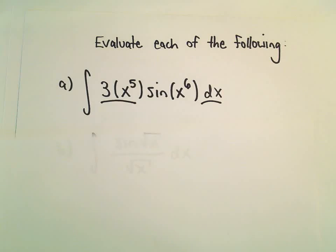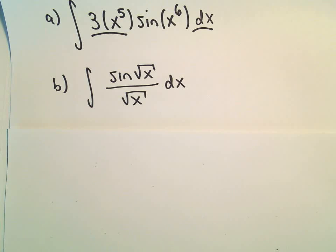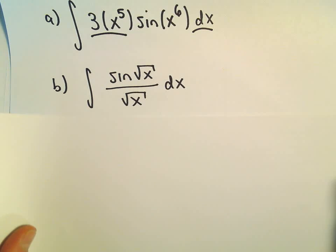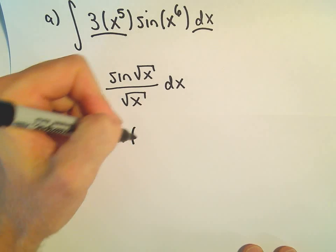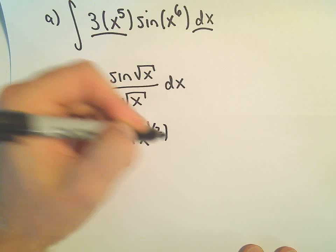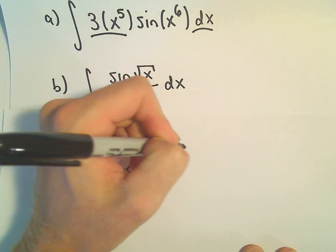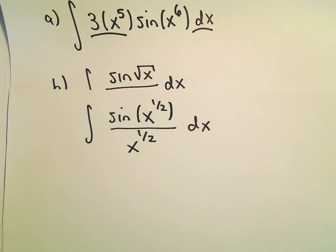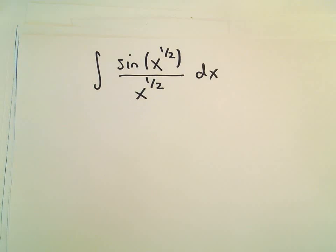So let's see. Let's look at the second one here. We have sine of square root of x divided by square root of x. I'm going to rewrite this as sine of x to the 1 half over x to the 1 half. And kind of the same idea. I think sometimes maybe this one doesn't seem like a u substitution at first.